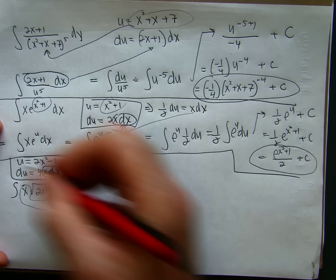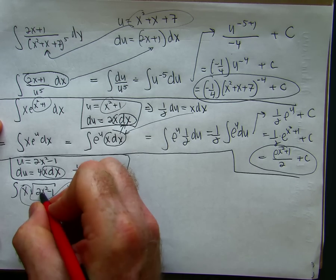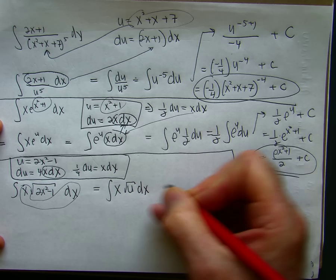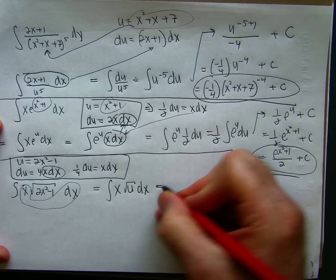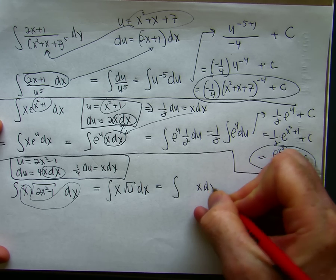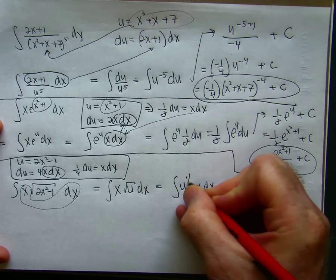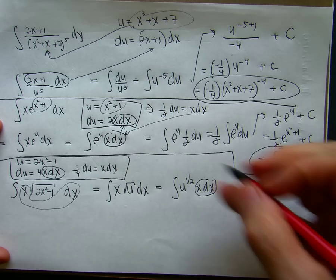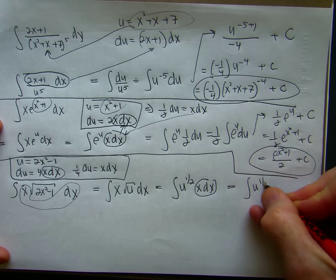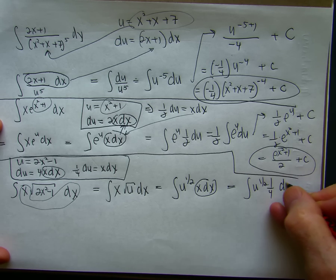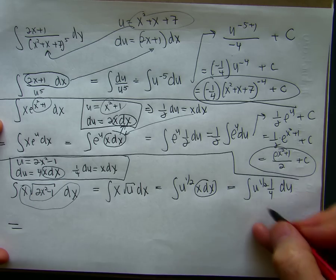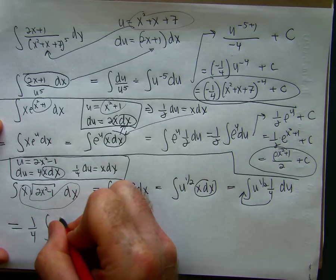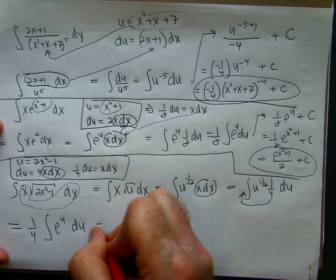Okay. And I'll go through the steps. That's my u. I'm going to gather my x terms. Write my radical as an exponent. I've already solved for x dx. Take the 1 quarter out. And integrate.